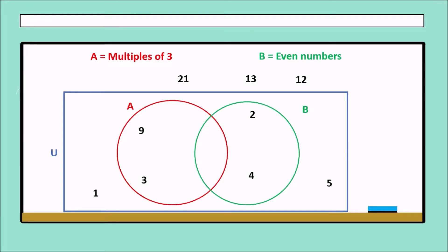9 is absolutely a multiple of 3 — because 3 times 3 equals 9. Next, 21 is a multiple of 3 because 7 times 3 equals 21. And finally, 12 is a special number: because 12 is an even number and also a multiple of 3, so we put it in the middle, in the intersection of both sets.